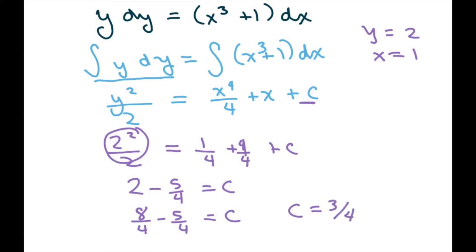Now, just plug it back in. We're going to plug the c back in right in here. So let's do that. So we have y squared divided by 2, equals x to the 4th, divided by 4, plus x, plus 3/4ths. So because then you found the c.